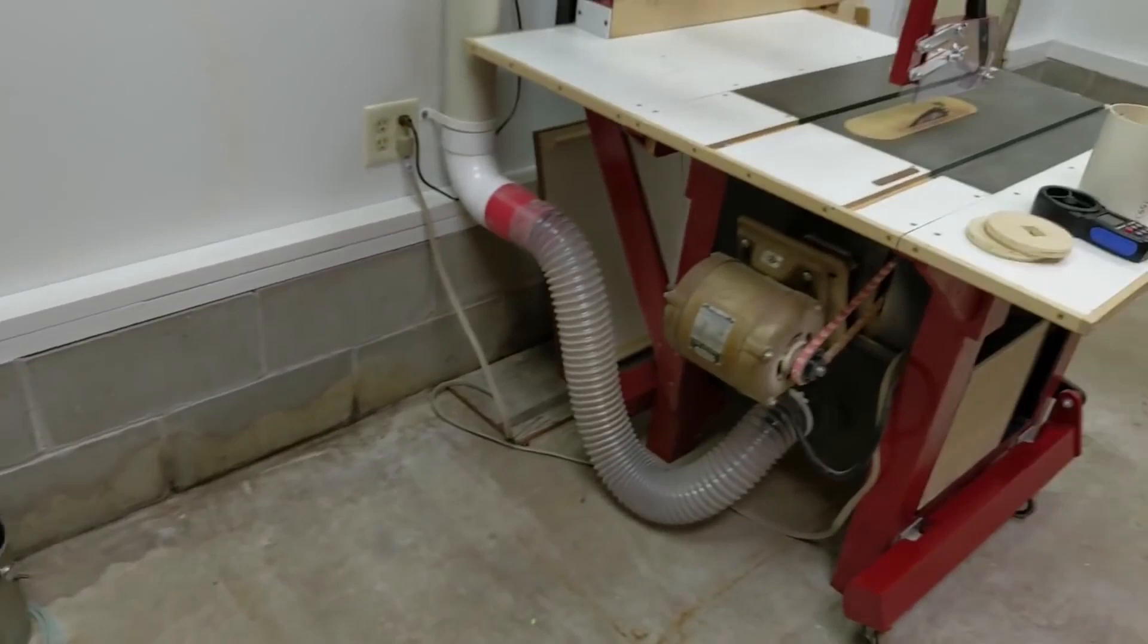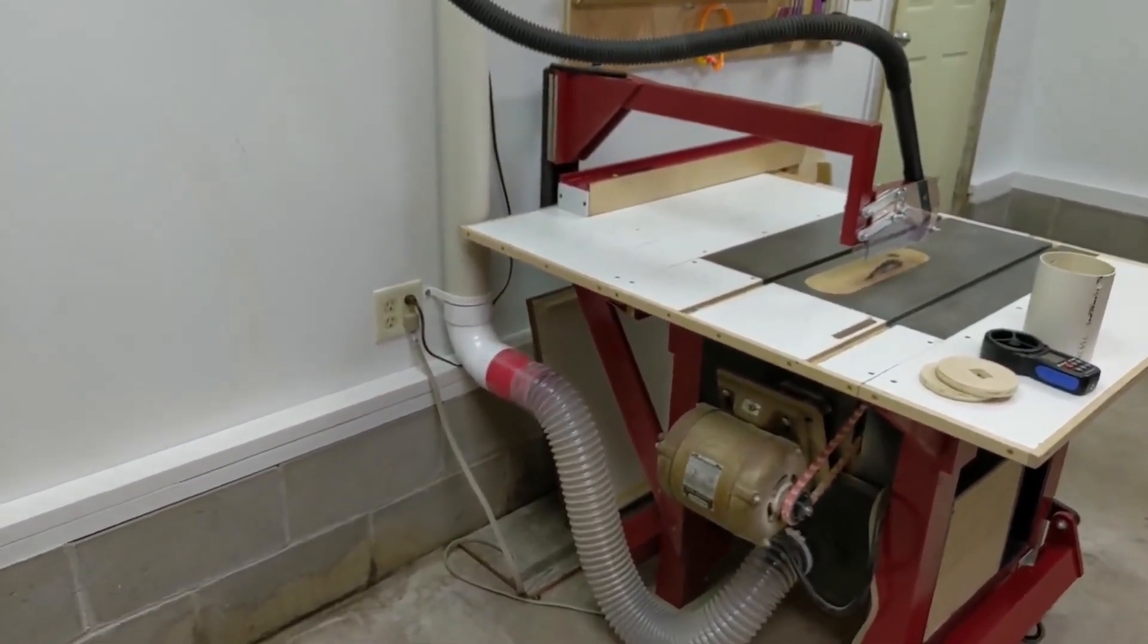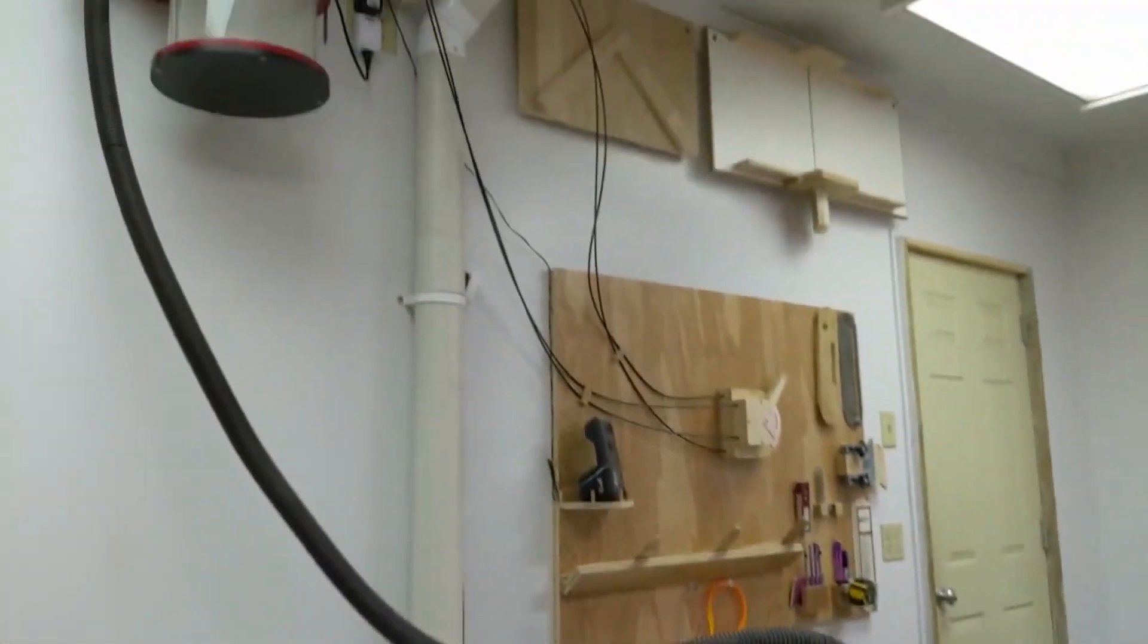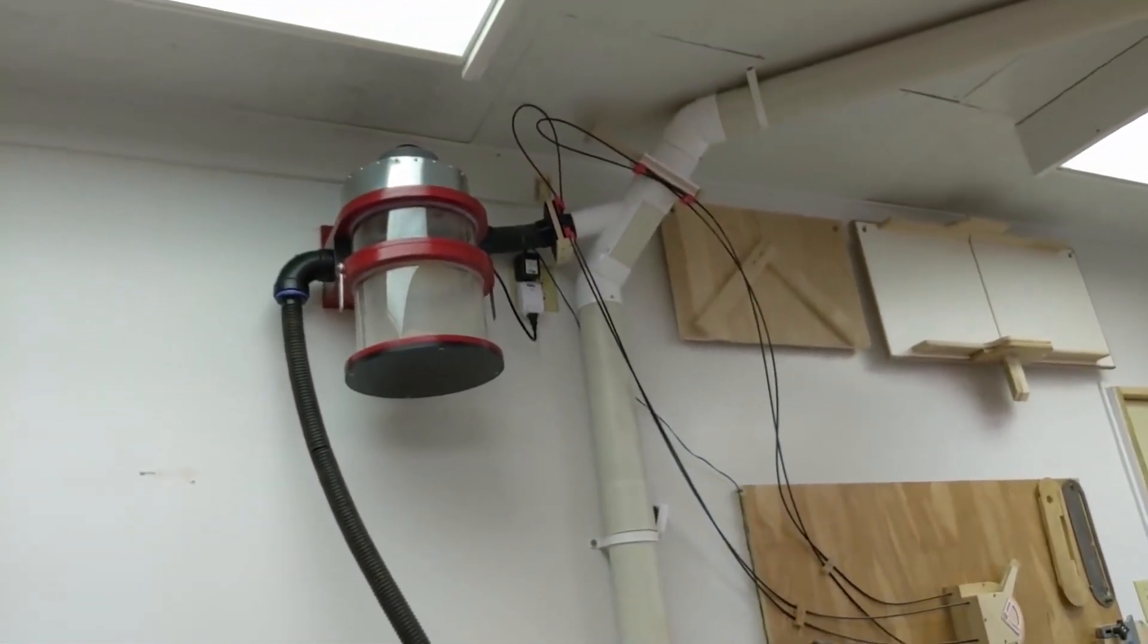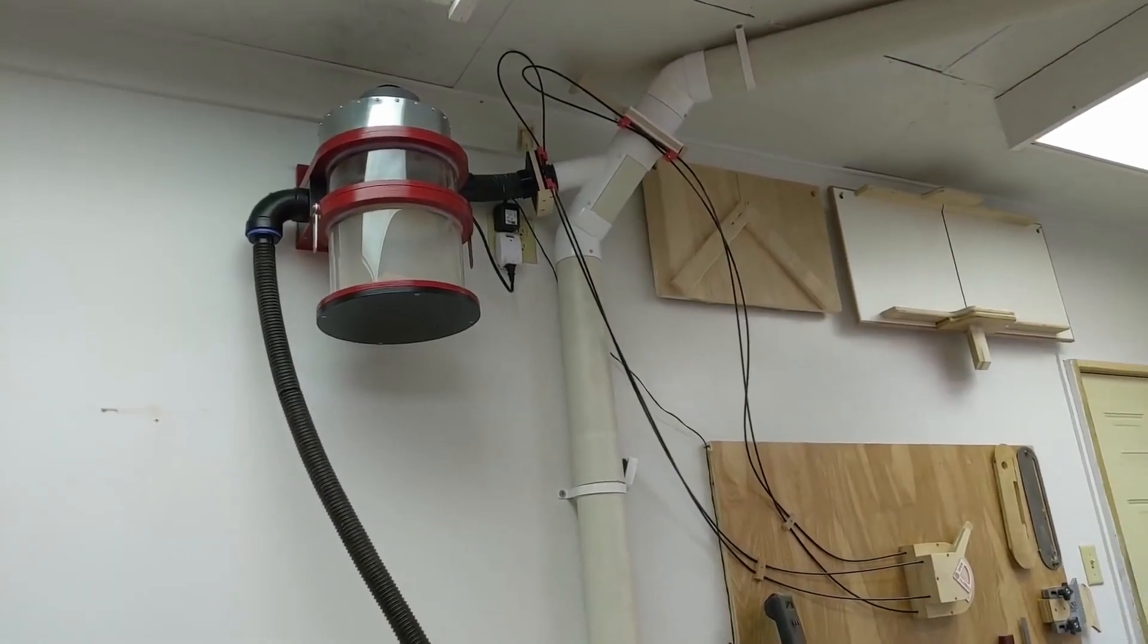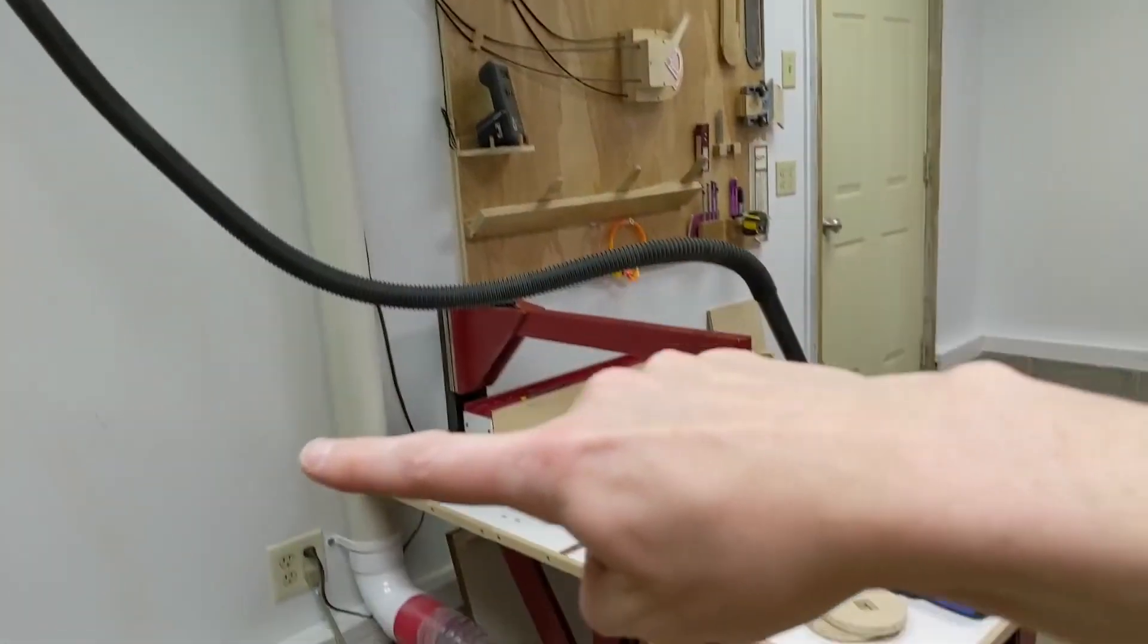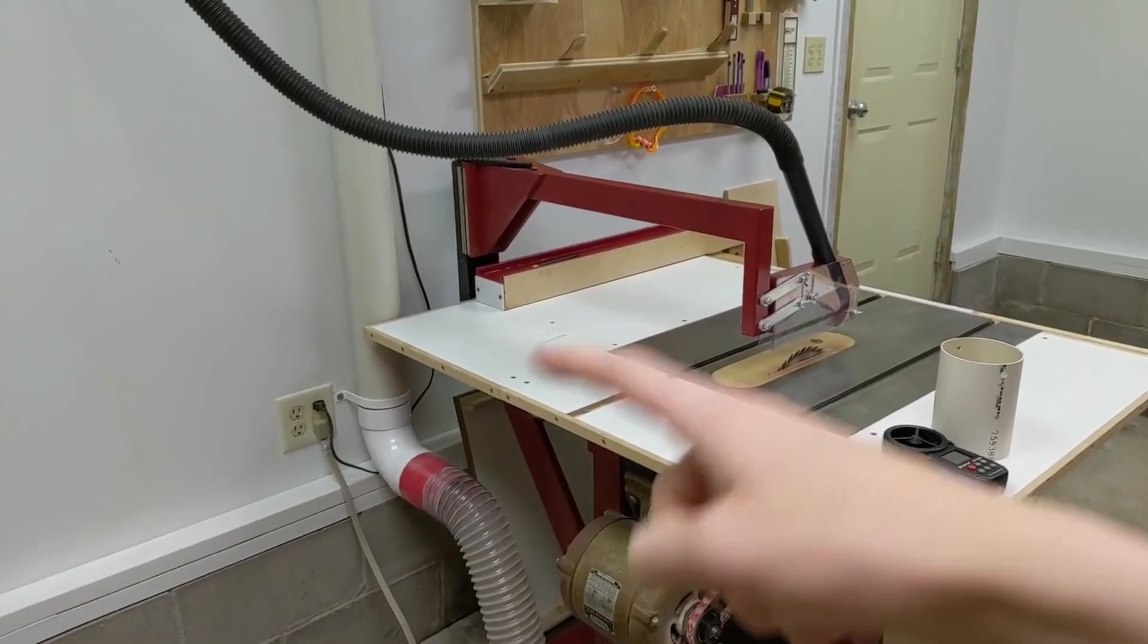So I'm going to start by measuring each dust collector individually. I will shut the blast gate for the mini dust collector and test just the main dust collector first. And I'll test it at the joint down here.